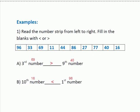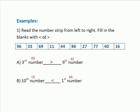Now, examples. Read the number strip from left to right and fill in the blanks with less than or greater than. Here you can see a number strip with different numbers. Question a: third number versus ninth number. We have to find which is the third number in the strip. Count 1, 2, 3 — the third number is 69. So we write 69 here.